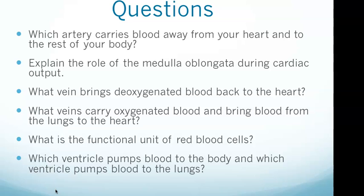We have questions at the beginning that we refer to throughout the video, then revisit at the end. Things to focus on: which artery carries blood away from your heart and to the rest of your body? Explain the role of the medulla oblongata during cardiac output. What vein brings deoxygenated blood back to the heart? What veins carry oxygenated blood from the lungs to the heart? What is the functional unit of red blood cells? And which ventricle pumps blood to the body and which pumps blood to the lungs?